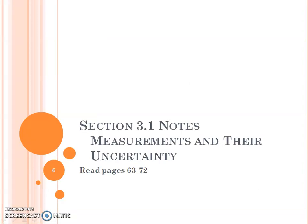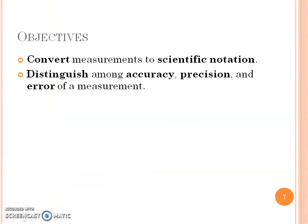Section 1 is on measurements and their uncertainty. In this section, your objective is going to be converting measurements to scientific notation, something you did in your summer packet. So I'm going to go through it kind of quickly, but I still need to know and understand and how to do it. And distinguish between accuracy, precision, and the error of measurements.